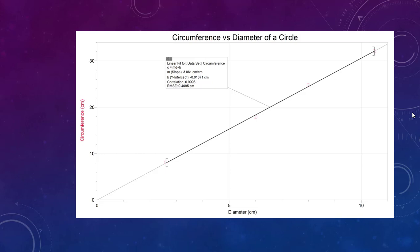Alright, so let's just walk through what this graph means in terms of our variables. In this lab we measured the diameter and the circumference of different circles. So those are our two variables, the diameter and the circumference.